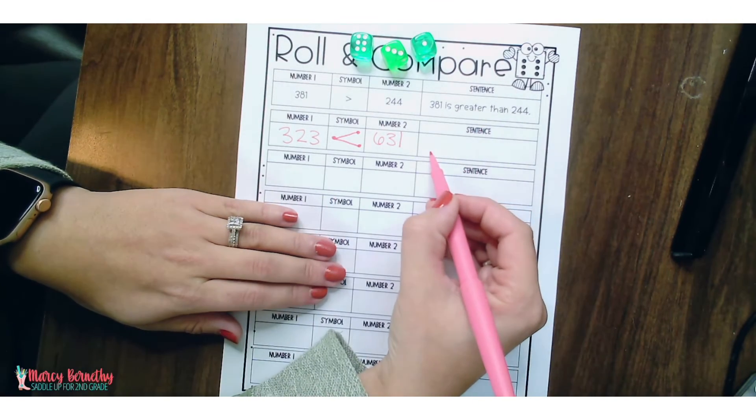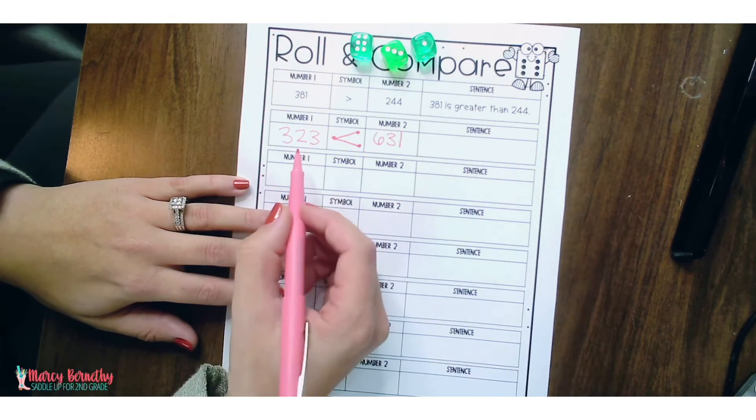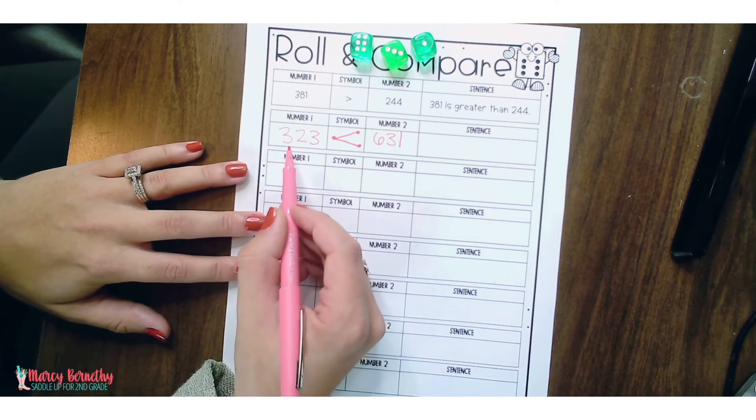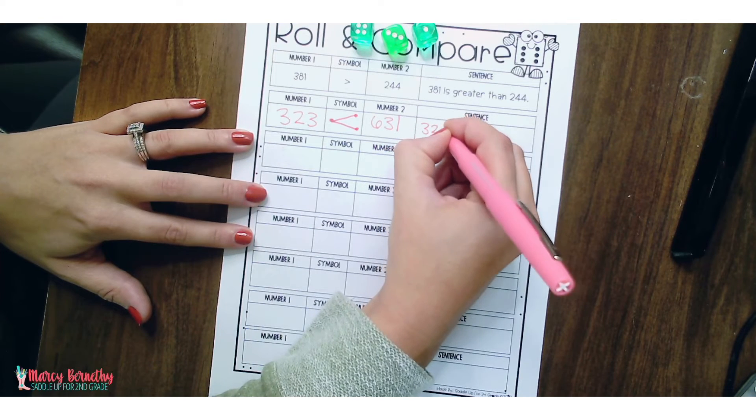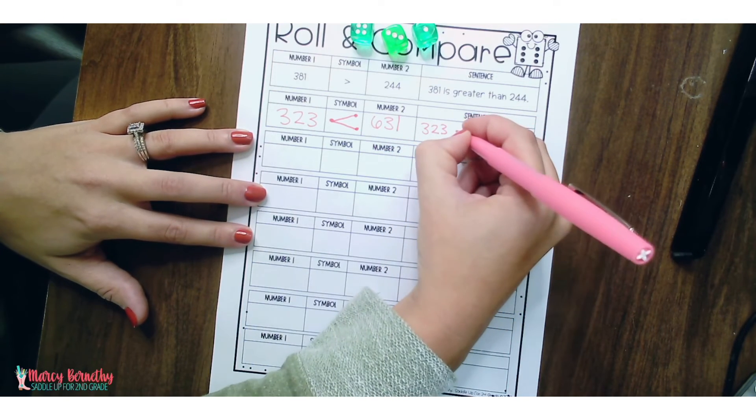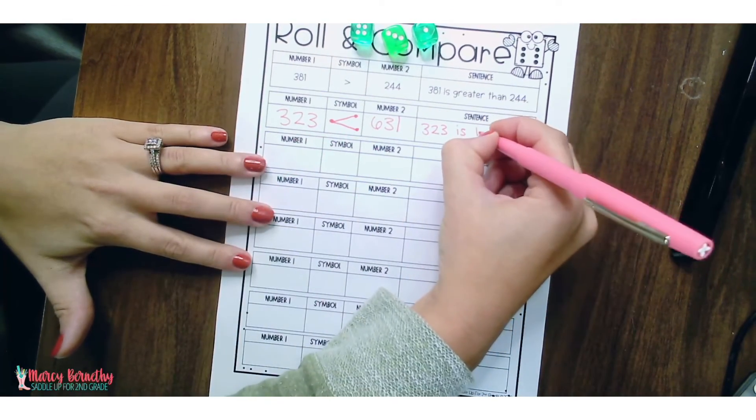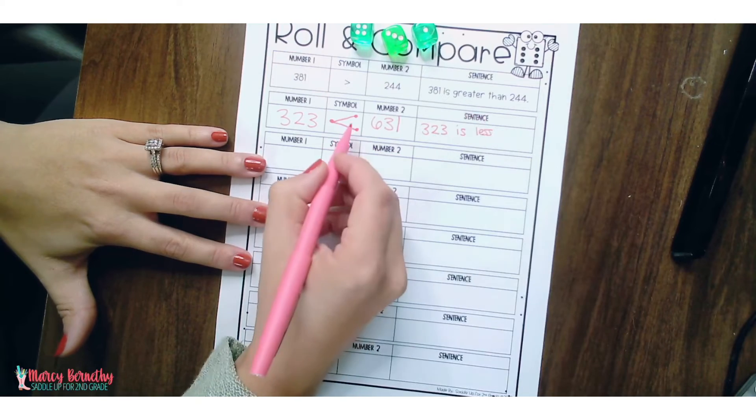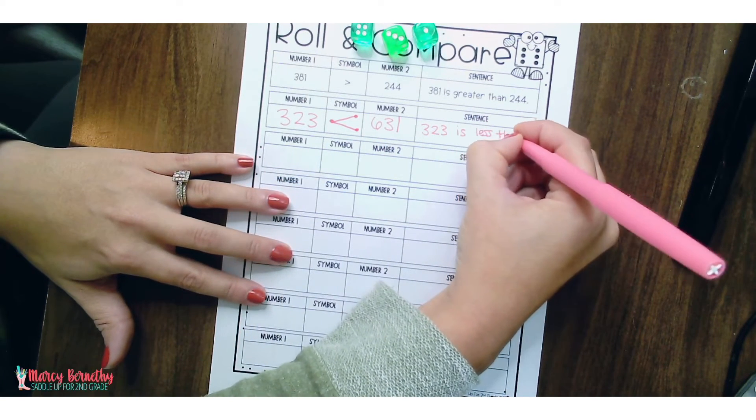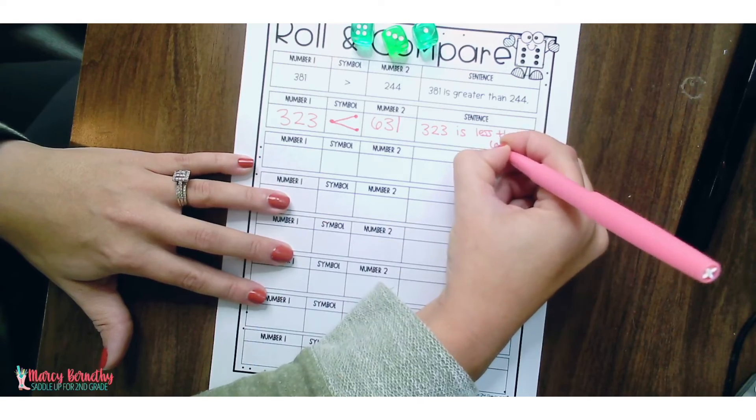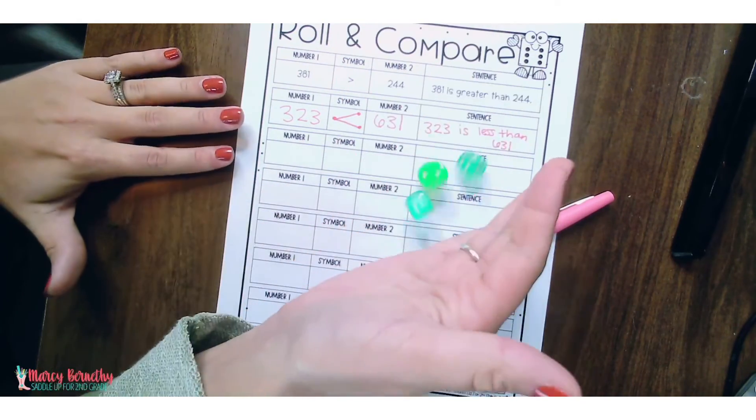So now we're actually going to write it out in a sentence and we are going to start with the first number. So we are going to say that 323 is less than, because the symbol that we created represents less than, is less than 631. And then it can continue.